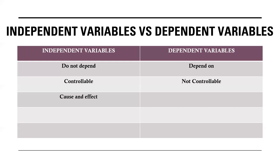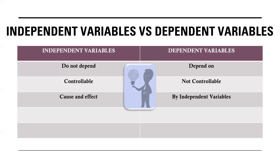Another difference relates to cause and effect. Independent variables represent the cause, while dependent variables represent the possible effect — the changes that happen in dependent variables are directly caused by the changes that happen in independent variables. In simple words, the dependent variables are explained by the independent variables.